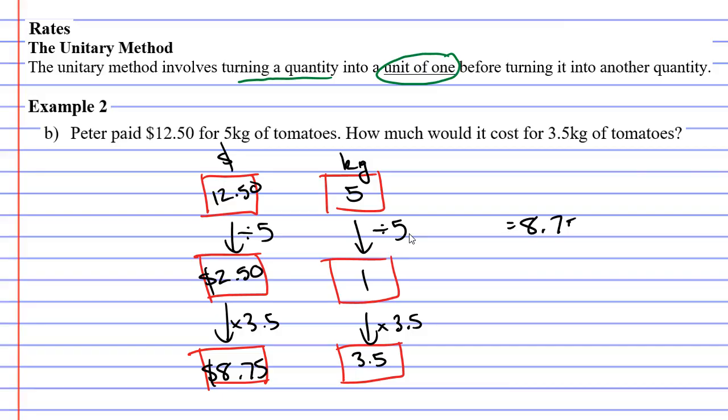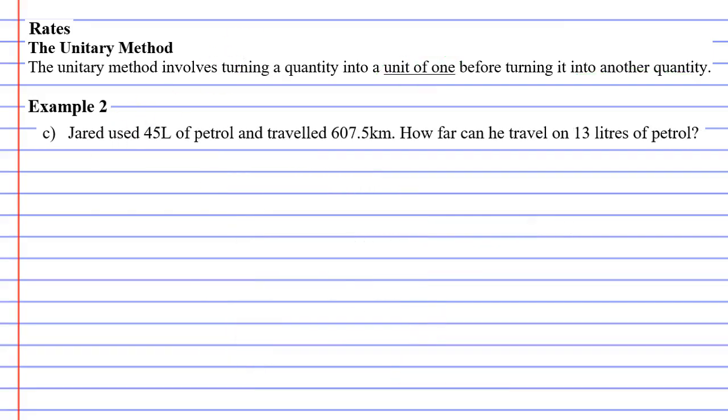$8.75 is how much it would cost for 3.5 kilograms of tomatoes. Going back to the unitary method, what we did is we turned a quantity into a unit of 1 before turning it into another quantity. We turned our 5 into 1 and then turned the 1 into the other quantity of 3.5.